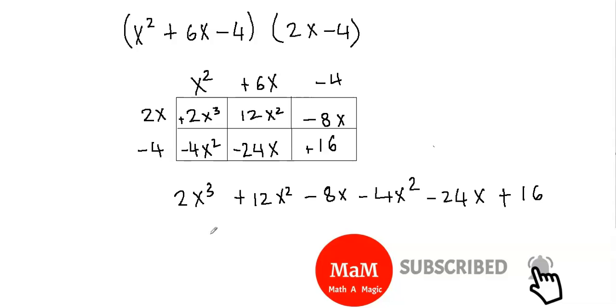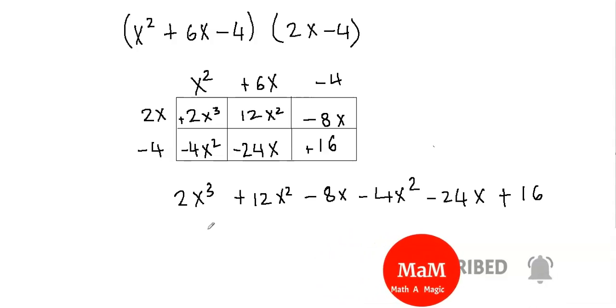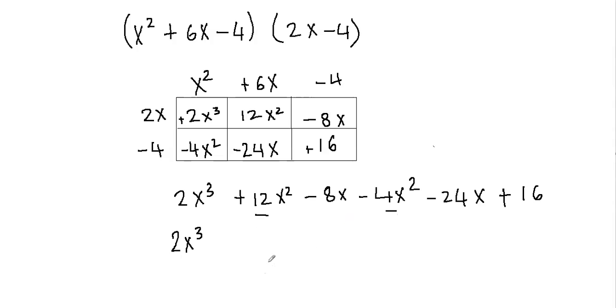Now let's start combining the like terms. I just have 2x cubed here. We don't have any other like terms, so we'll just put 2x cubed here. Then we have 12x squared and negative 4x squared. So 12x squared minus 4x squared will give us 8x squared. So these terms are gone.